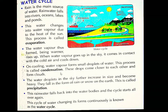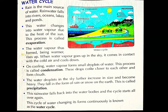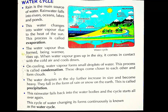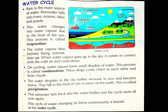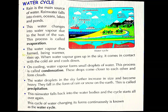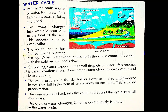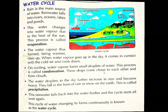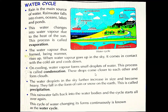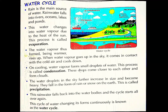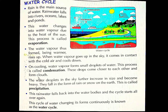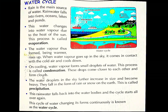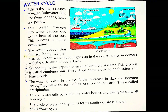This process is called condensation. Aur ye jo paani ki bundon mein badalna hota hai, us baaf ka ye condensation kehlaati hai. These drops come closer to each other and form clouds. Aur aasmaan mein ye aapas mein ek dusre ke nazdeek aati hain, ye paani ki bunde, aur fir isse dheere-dheere ek baadal ban jaata hai, jisko hum cloud bolte hain.